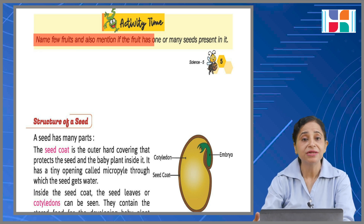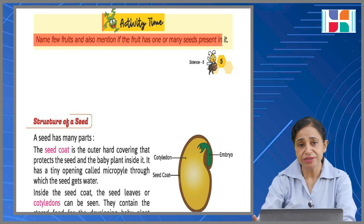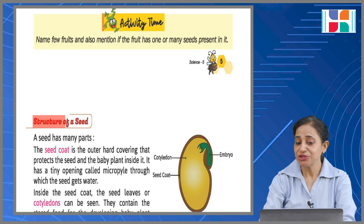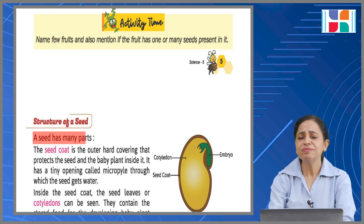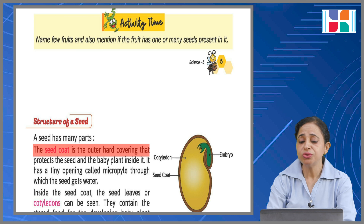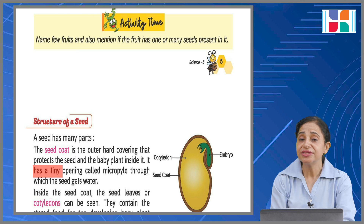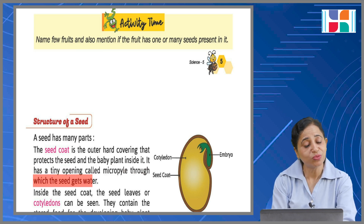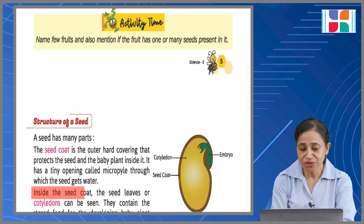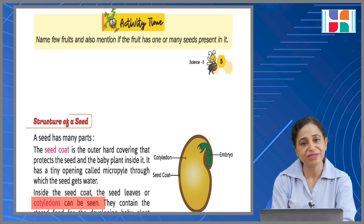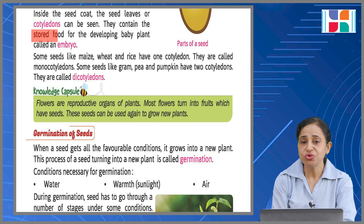Now let's look at the structure of a seed. A seed has many parts. The seed coat is the outer hard covering that protects the seed and the baby plant inside it. It has a tiny opening called the micropyle, through which the seed gets water. Inside the seed coat, the seed leaves or cotyledons can be seen — they contain the stored food for the developing baby plant, called an embryo.